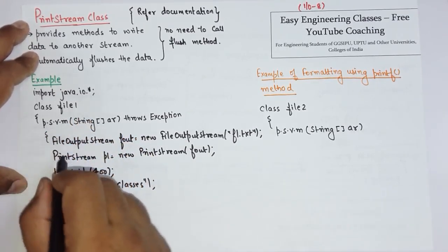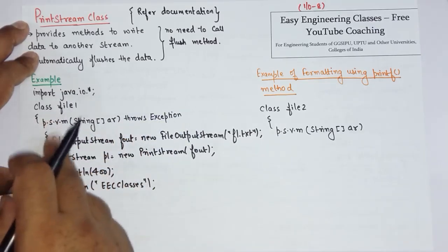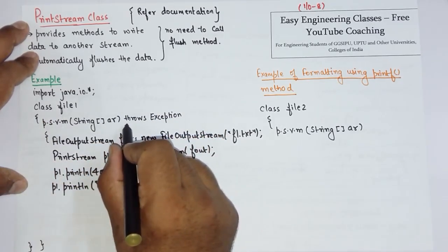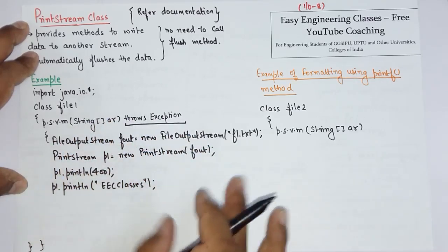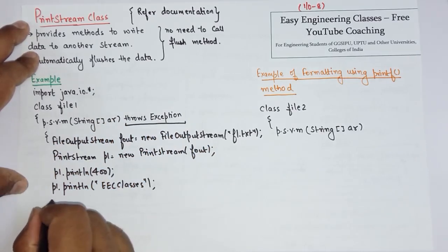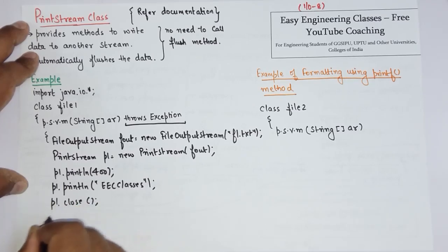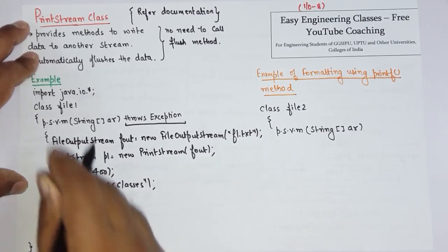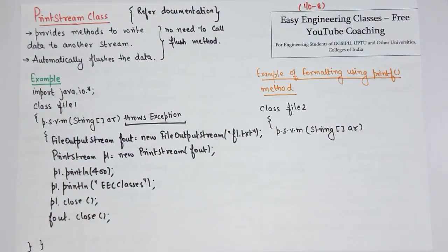Moreover, the PrintStream method does not throw an exception, so here I am not actually using try-catch. But in case there is an exception, I am using throws exception here, so it is perfectly fine. In the end, just close the objects p1 and fout. This is how you can use PrintStream class to flush the data to the file.